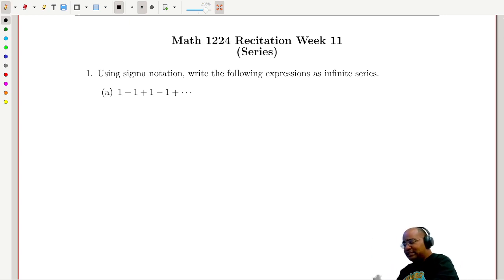So if we consider the sequence a_n equals, well, what happens here? When n is equal to 1, we have a plus 1, when n is equal to 2, we get a minus 1, we get a plus 1. So it looks like we're alternating at each stage.